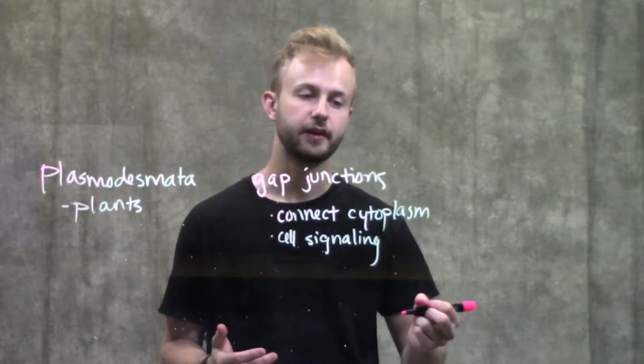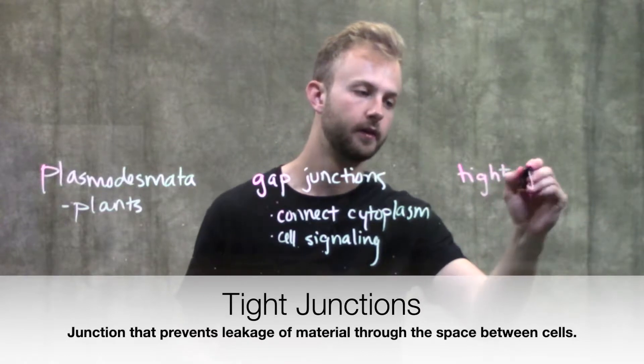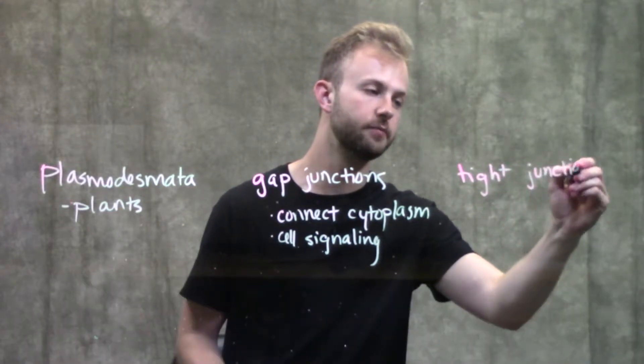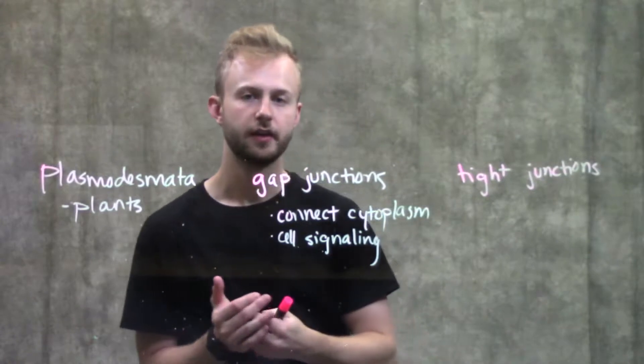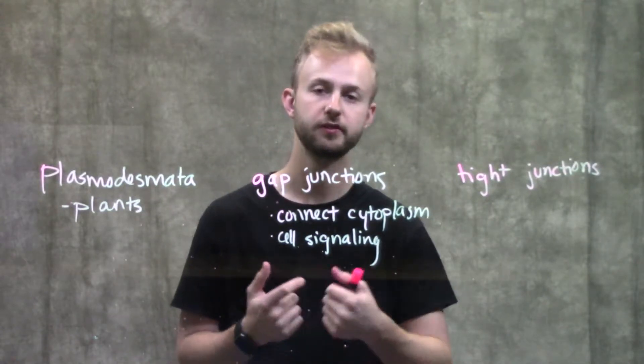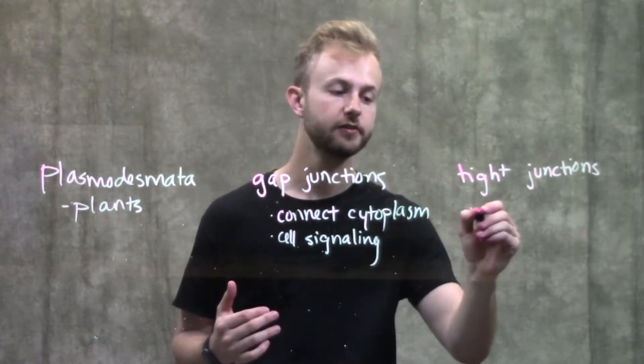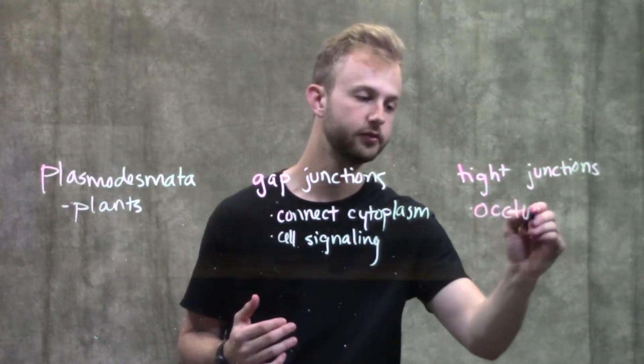The next one we're going to look at are tight junctions. Tight junctions are between two cells, typically epithelial cells. When we have tight junctions, they block the movement of things between those cells. These are called occluding junctions.